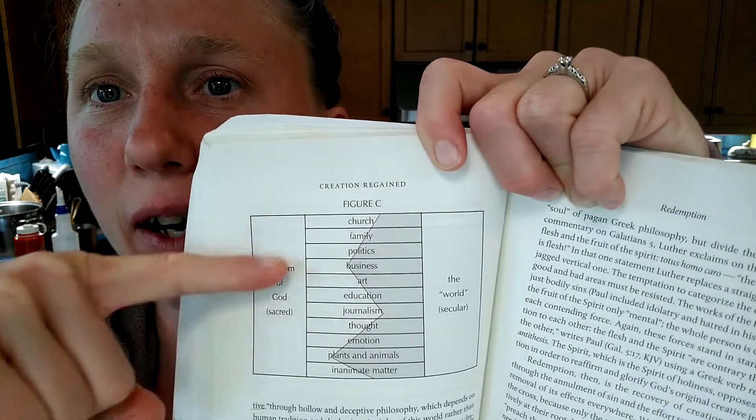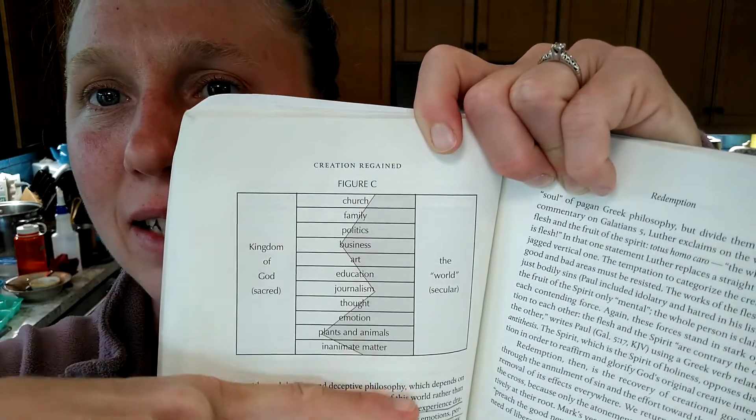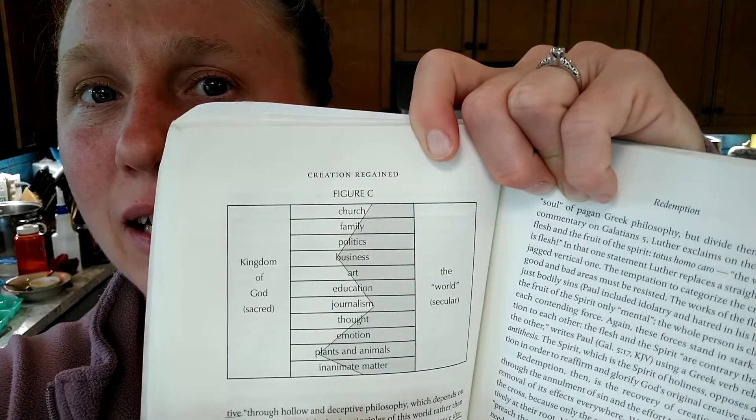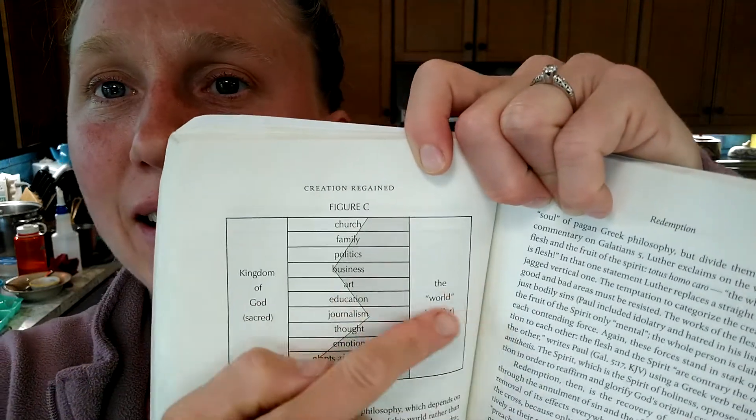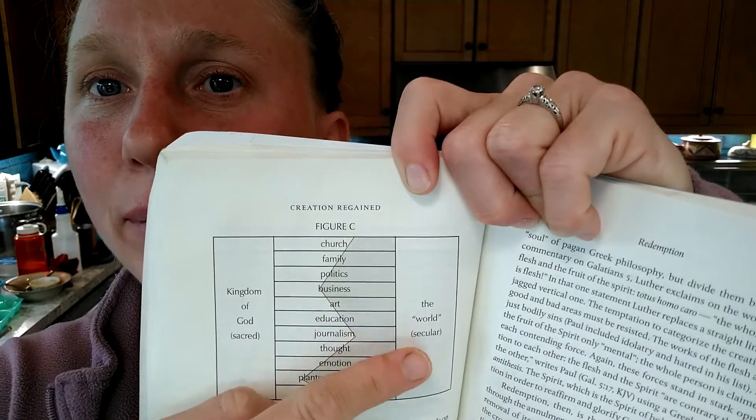Instead of there just being a line and saying the church is part of the Kingdom of God and all the rest doesn't matter, it's part of the Kingdom of Satan, what Walters says is that the line is constantly moving back and forth because both Christ and Satan are laying claim to all of the creation.